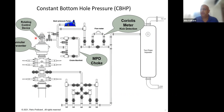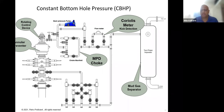These are the main components of MPD. The RCD is typically mounted on top of your annular preventer, and you use a mud gas separator so that if you get a gas influx, you can circulate it out.